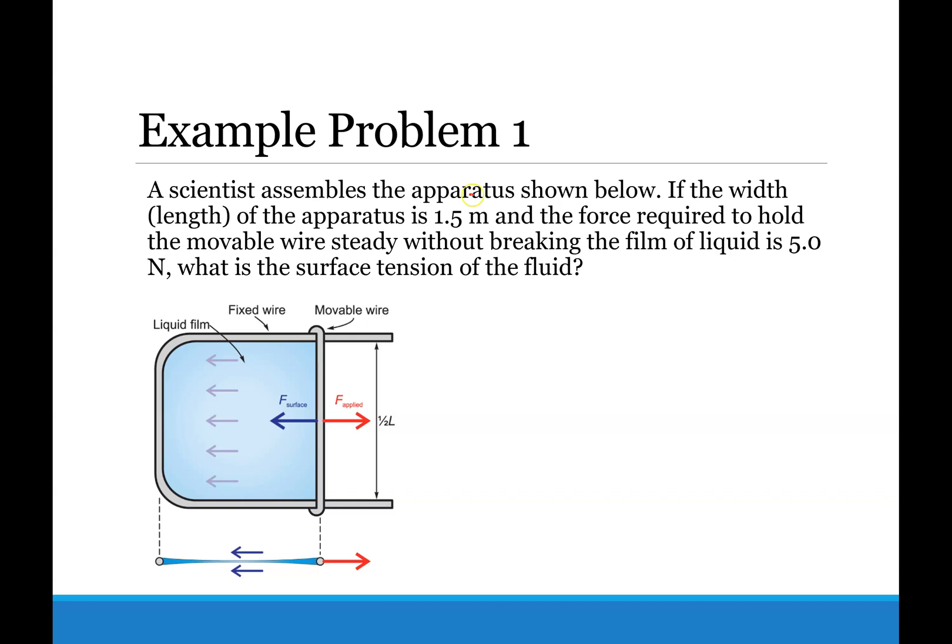So the problem tells us that we have a length of 1.5 meters. You always should remember in these types of problems to multiply the length right off the bat times 2 because there are two sides to this apparatus. Imagine that this is 3D and that there are two sides to it. So always multiply that length by 2. So 1.5 times 2 is going to be 3 meters.